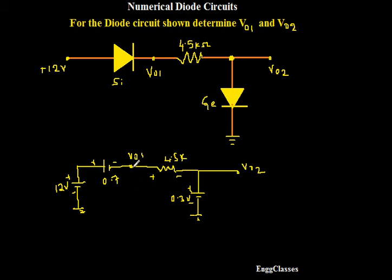So now V01 is at this point of time. V01 is nothing but if I want to measure using the multimeter, you will keep positive end of the multimeter at this point and negative end of the multimeter at ground. So this is how I indicate V01. This will be positive, this will be negative.